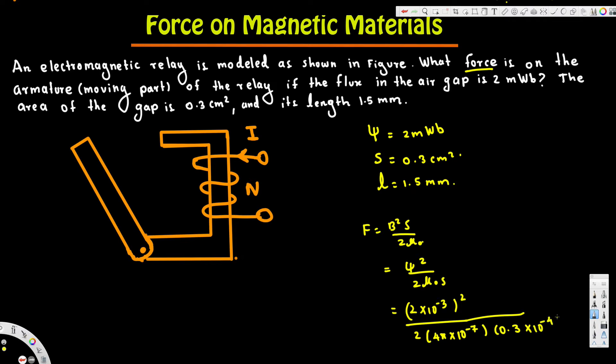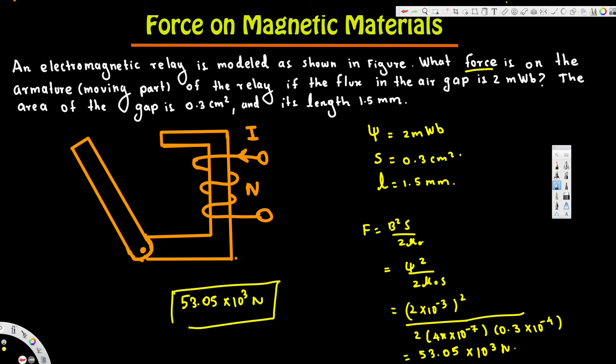If you calculate this, you will get 53.05 times 10 to the power of 3 newtons. Therefore, the force on the moving part of the armature relay is 53.05 times 10 to the power of 3 newtons. That's how we do this kind of problem. I hope this helps.